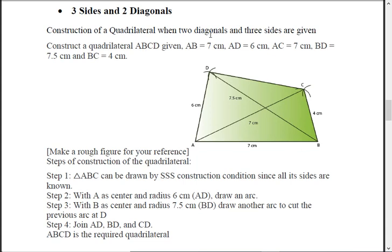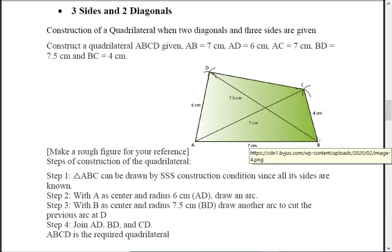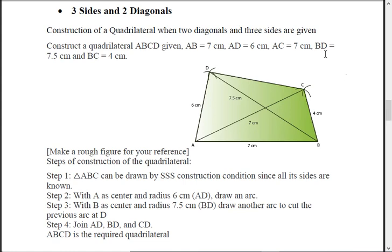Start by drawing AB of length 7. From A, take the compass and make an arc of 6; from B, make an arc of 7.5 — cut them to locate point D. Join AD. Similarly, for point C, take an arc of 4 from A and an arc of 7 from B, cut them to get point C, then join it. The rule is: always start from the side whose endpoints you already know something about.